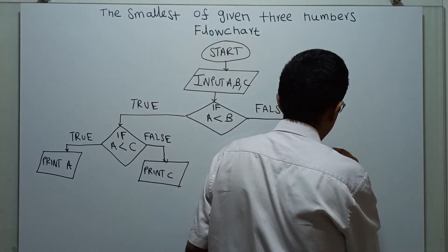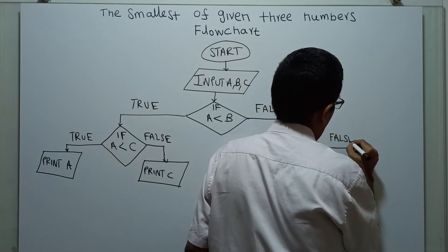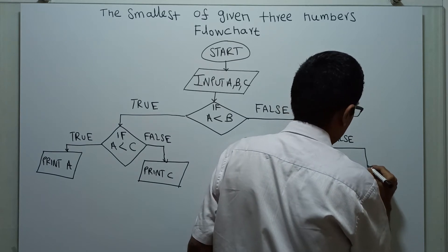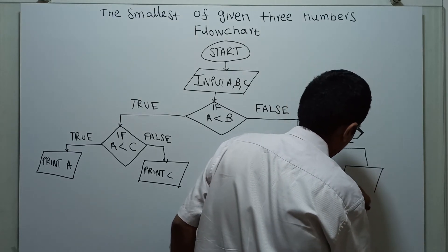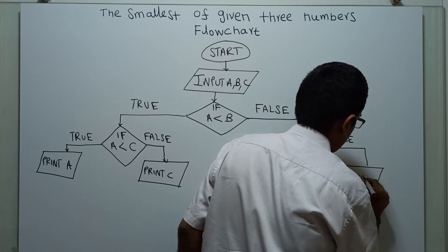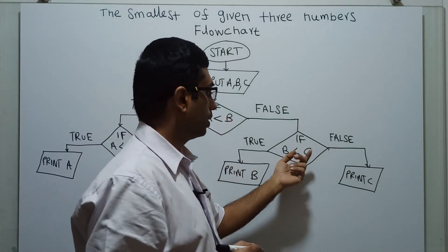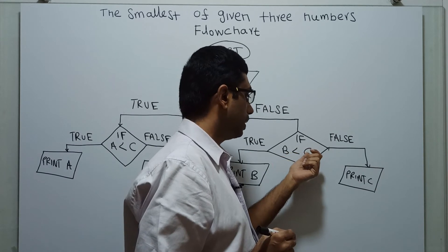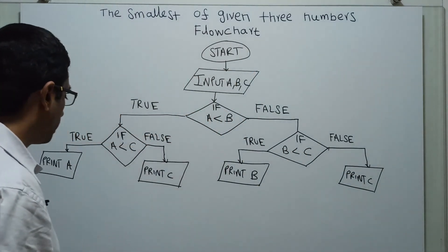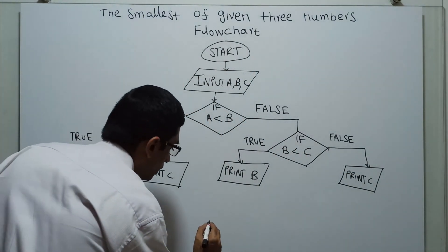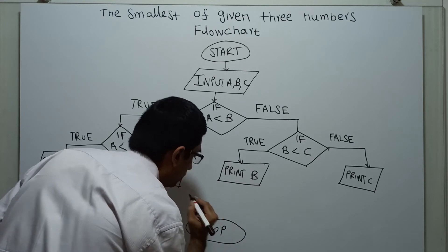If B less than C is false, I am printing C. A less than B is false means B is less than A. B less than C is false means C is less than B. So B is less than A and C is less than B — that is why I am printing C here. This is the logical end of the flowchart.